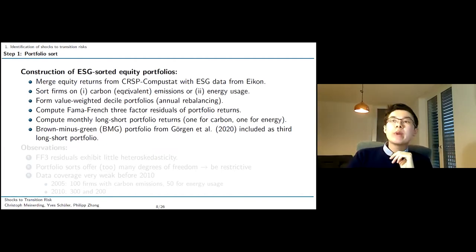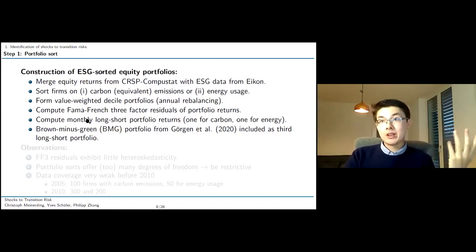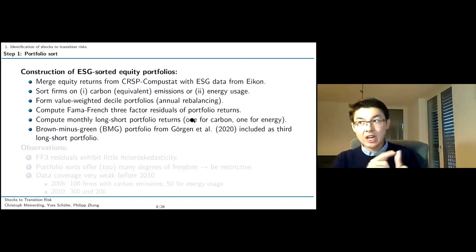How do we actually sort? We use CRSP CompuStat data for stock market returns. We merge it with ESG data from Thomson-Reuters ICON, and we do two portfolio sorts. One using carbon emissions or carbon equivalent emissions as a sorting variable, and a second one using energy usage. Standard asset pricing machinery, we form value-weighted decile portfolios which are annually rebalanced. We compute Fama, French, three factor residuals for our portfolio returns. We can simply look at the long short portfolio, 10 minus 1 in the sense brown and green. And we get a time series for returns, basically two: one for carbon and one for energy.